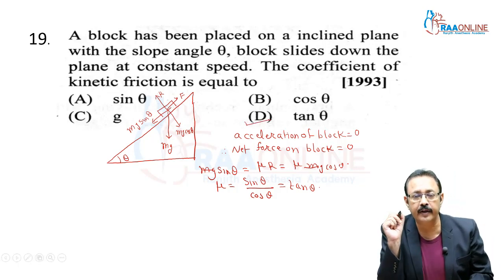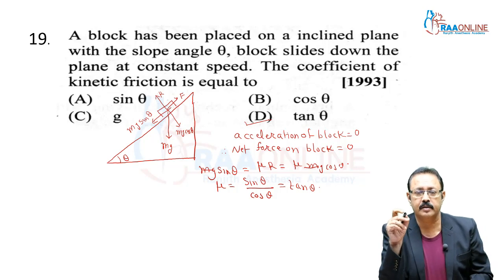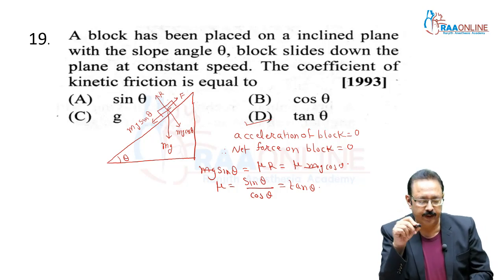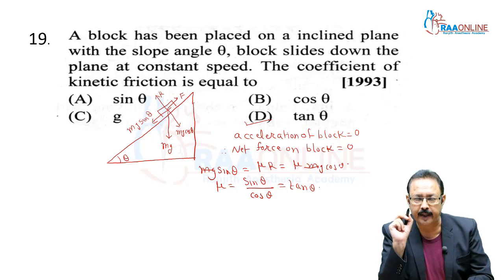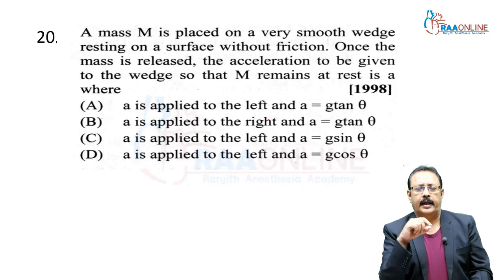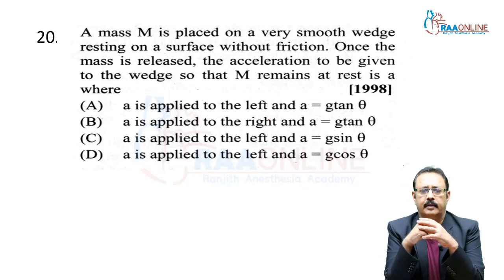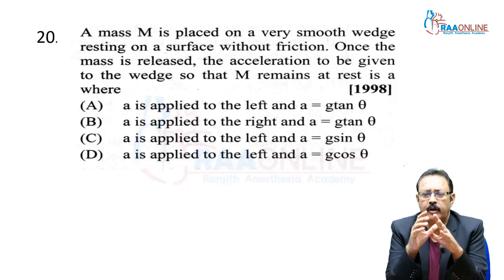Next: A mass m is placed on a very smooth wedge resting on a frictionless surface. Once the mass is released, the acceleration to be given to the wedge so that m remains at rest is A, where A = g tanθ (option C).